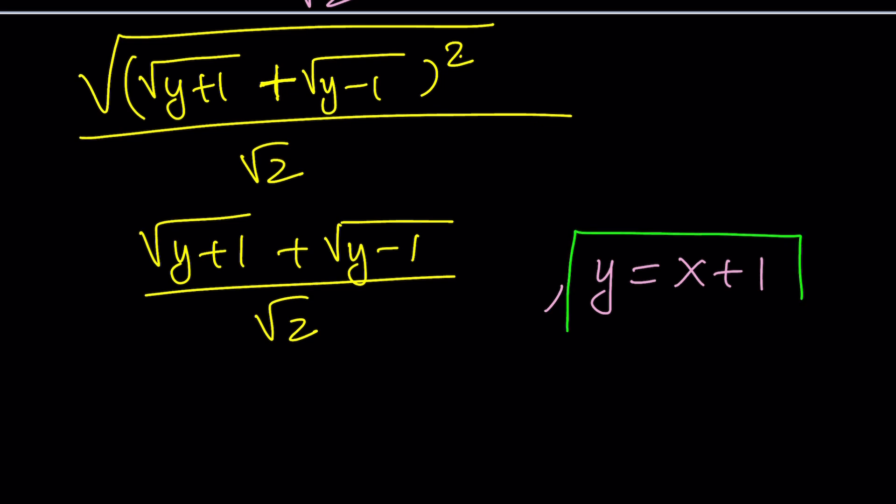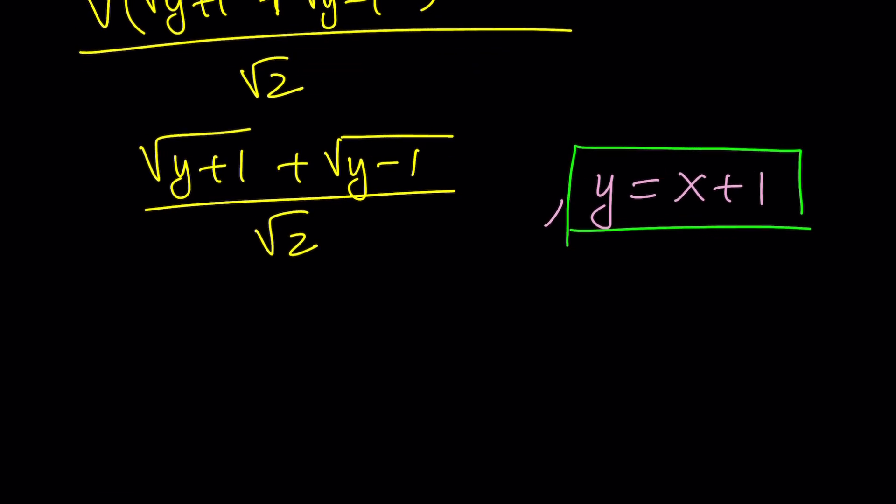So, replace y with x plus 1. This is going to be x plus 1 plus 1. So, it's going to be square root of x plus 2. And then this one is going to be square root of x plus 1 minus 1, which is just x, divided by root 2. Now, let's go ahead and multiply by root 2 or radical 2. And this is going to become 2.